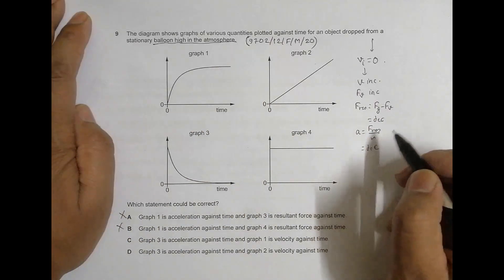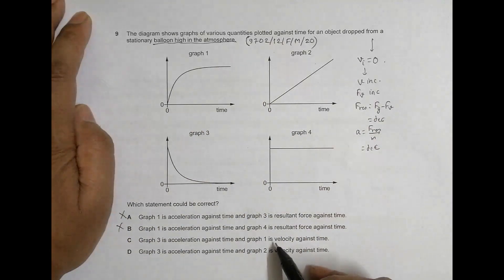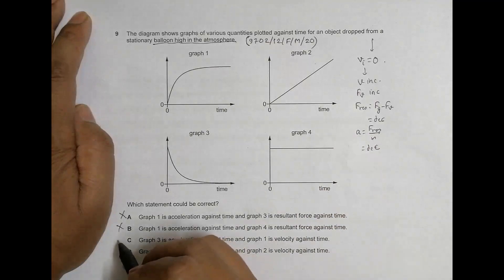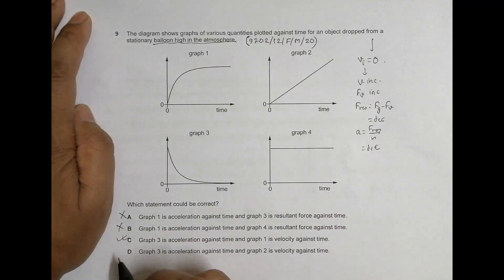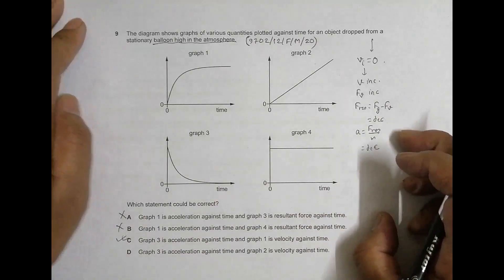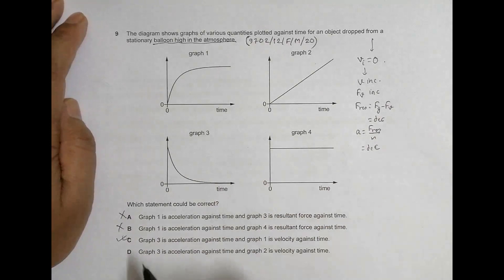So from this thing I can say that choice C is the correct choice and D is the incorrect choice. No, let's not jump into conclusion. So I jumped into conclusion, let's not do that.